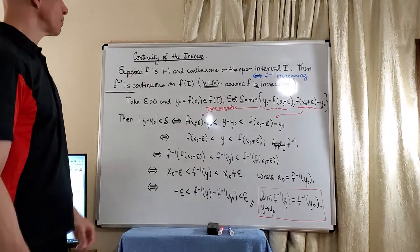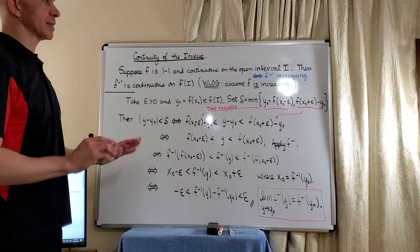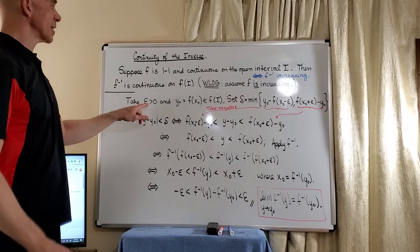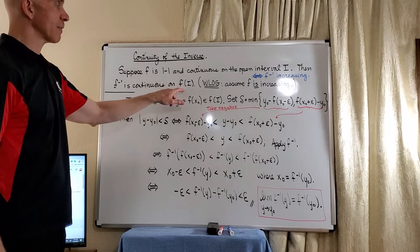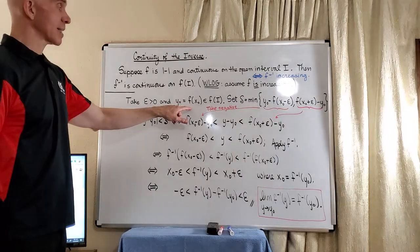So what we're going to do, as with any epsilon-delta proof, is take an epsilon positive and take a y-naught in f of i, which will be written as f of x-naught.